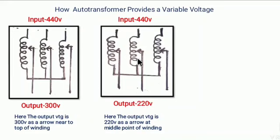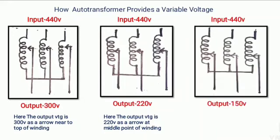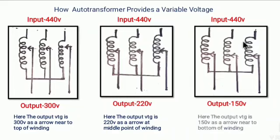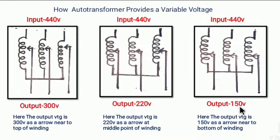The number of turns consumed by the secondary side is less compared to the previous diagram, therefore the output voltage is less. In the next diagram, the same input voltage of 440V is present. Here the movable contact is at the bottom of the winding, therefore the number of turns consumed by the secondary side is less compared to the previous one, and the output voltage is 150V.